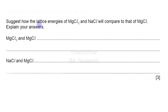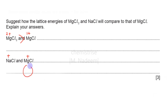In this question we have to compare the lattice energies of MgCl₂ and NaCl relative to MgCl. MgCl₂ has Mg²⁺ ions while MgCl has Mg¹⁺ — so Mg²⁺ has greater charge density and MgCl₂ will have a more negative lattice energy than MgCl. For NaCl versus MgCl: both Mg and Na are +1, but Mg is on the right side of the periodic table so it is smaller than Na. Therefore Mg¹⁺ has a greater charge density than Na⁺, so MgCl will have a more negative lattice energy than NaCl.